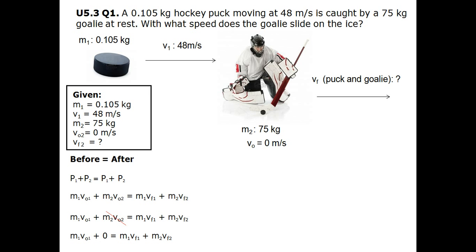From the given, we mentioned that the final velocity is for both the hockey puck and the goalie, and that means the mass is equal to the puck and the goalie together. So we write a new equation: mass 1 multiplied by initial velocity 1 equals bracket mass 1 plus mass 2 times final velocity.